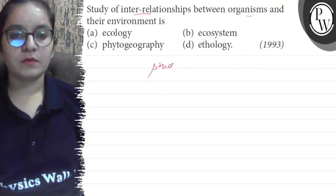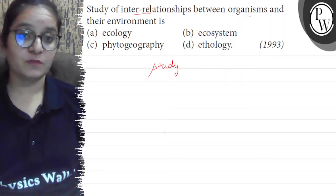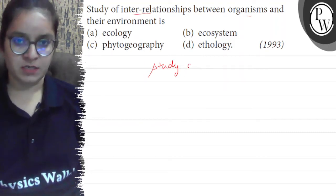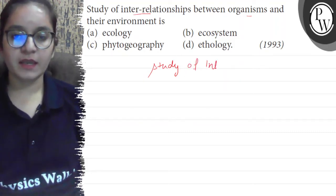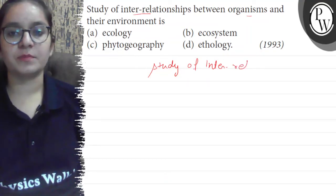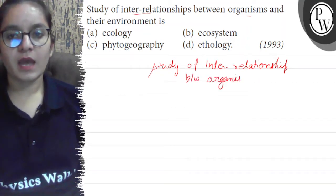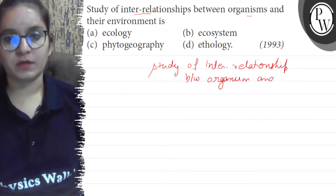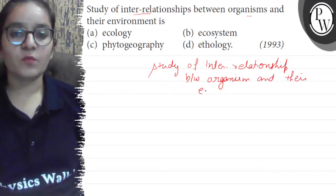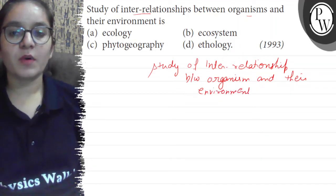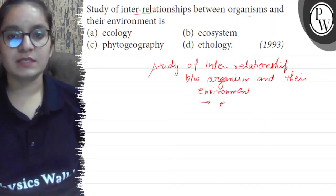So which is the study of — first of all, the branch of science that deals with the study of interrelationship between organism and their environment. Interaction of biotic component with the abiotic component is known as ecology.